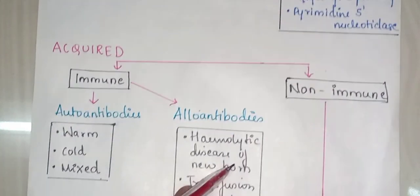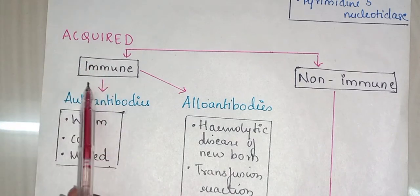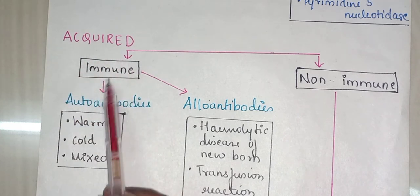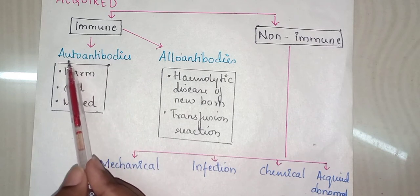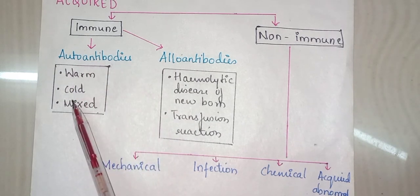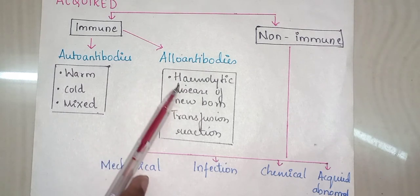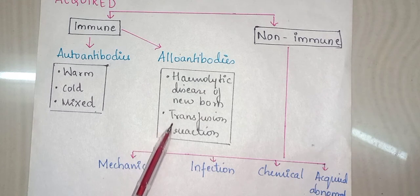Now we come to the acquired type. In inherited it is due to genetic causes, whereas in acquired it is further divided into immune and non-immune. In immune, we have a further division into autoantibodies and alloantibodies. In autoantibodies we have warm antibodies, cold antibodies, and mixed antibodies. In alloantibodies we have hemolytic disease of the newborn and hemolytic anemia of transfusion reaction.